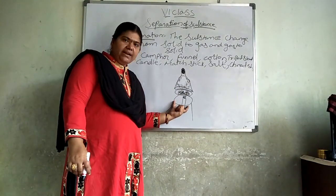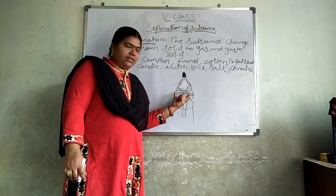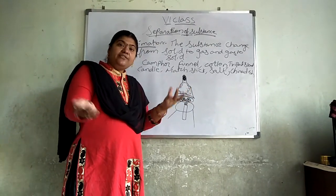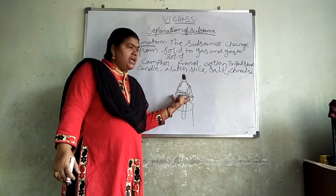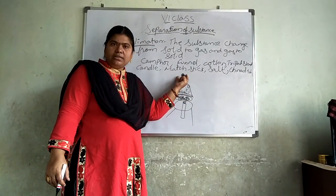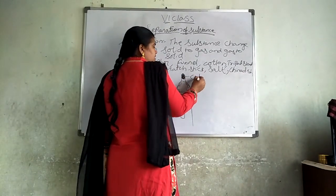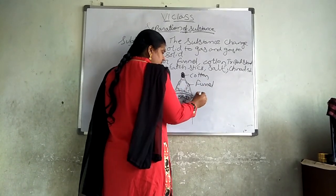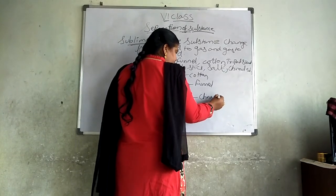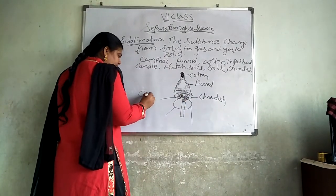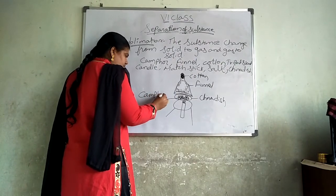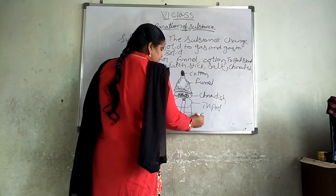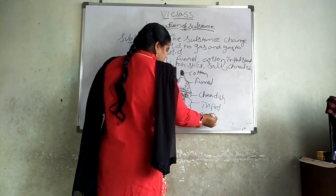Place a tripod stand. On the tripod stand, place a chain dish. On this chain dish, place camphor and salt, and invert the funnel on it. Cover the hole of the funnel with cotton. I am writing here — this is cotton, this is funnel, this is chain dish, here we have camphor and salt, this is the tripod stand, this is the candle.